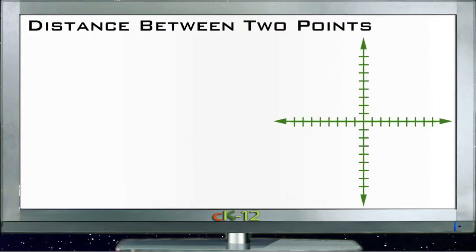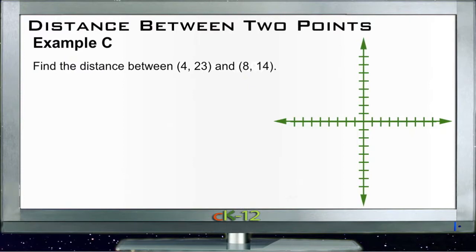Alright, and then Example C. Again very similar: find the distance between, in this case we're looking for the distance between (4, 23)—holy cow, it's going to be way up there somewhere—and (8, 14). (8, 14) is also going to be way up there somewhere. Well, we don't have to plot them exactly because we're going to do it mathematically anyway.